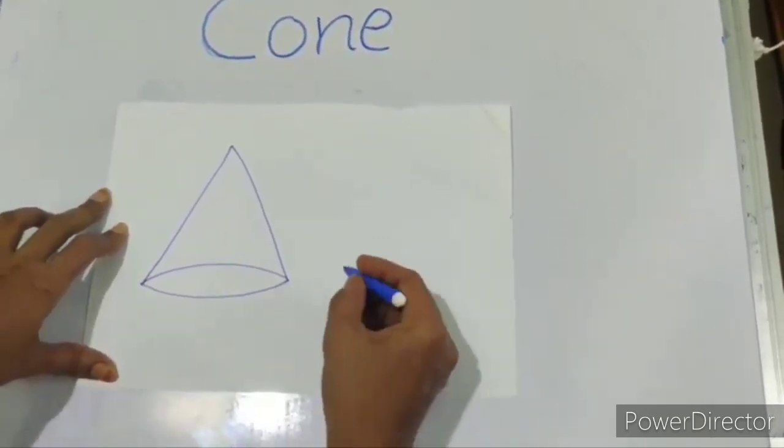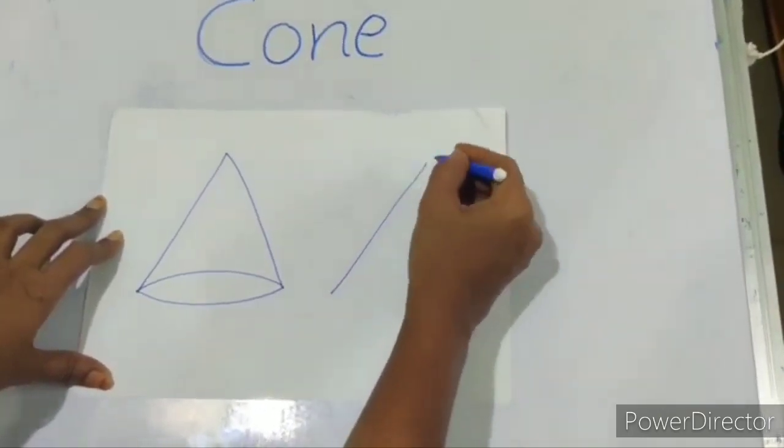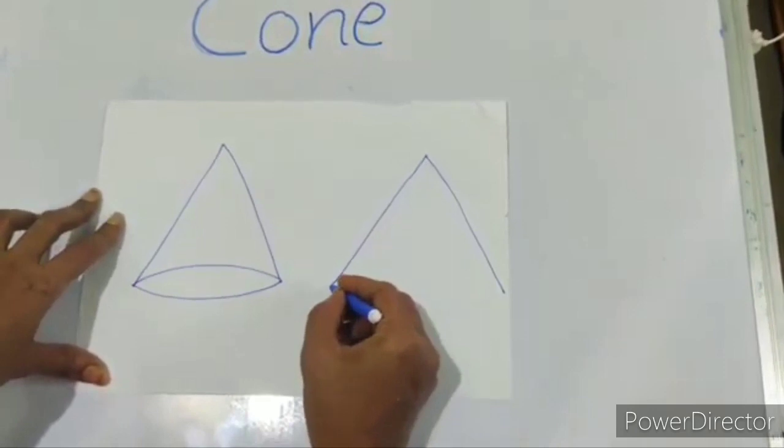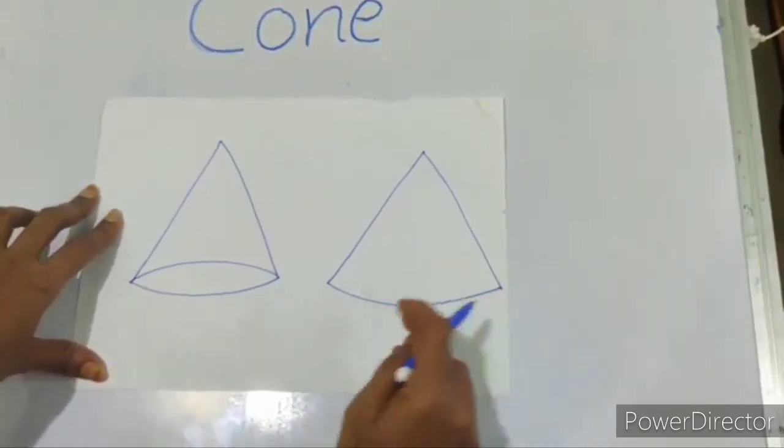Let us learn one more method. Draw two slanting lines like this. Then draw the half oval. You got a cone.